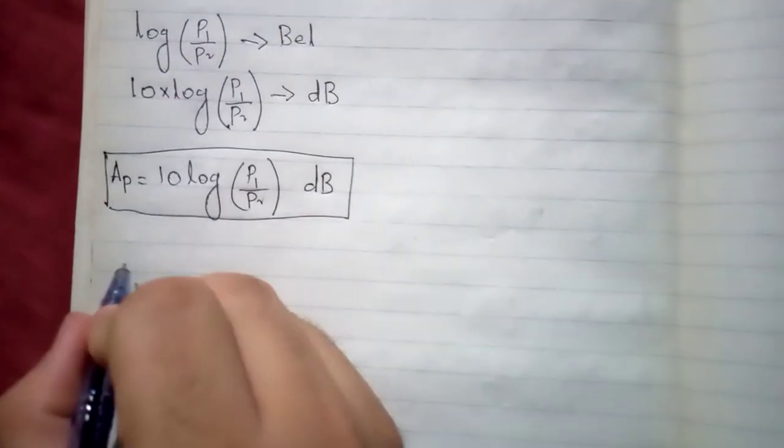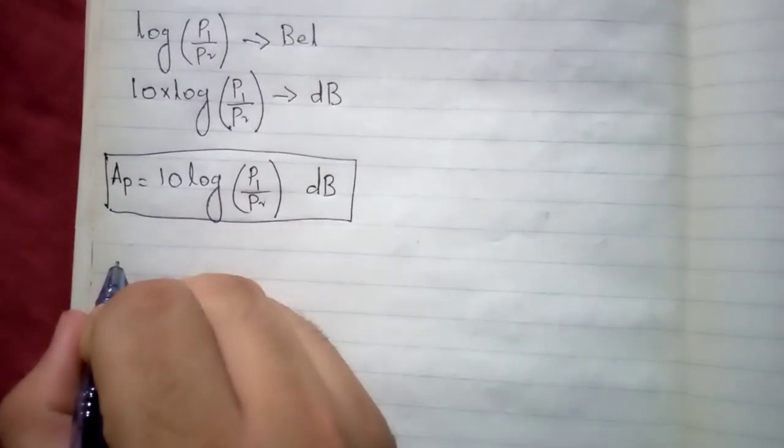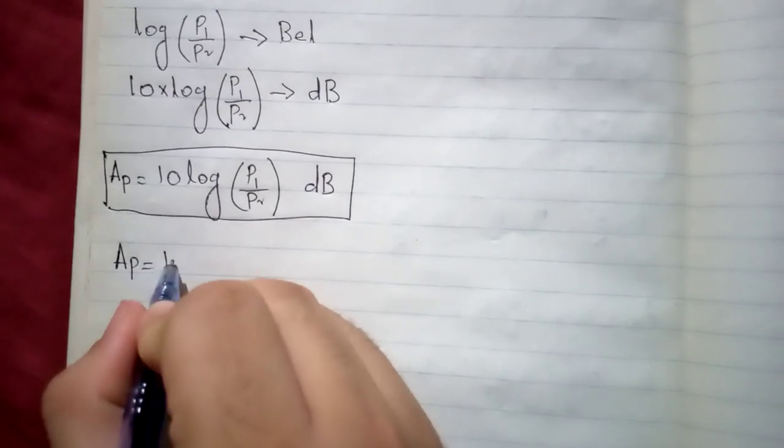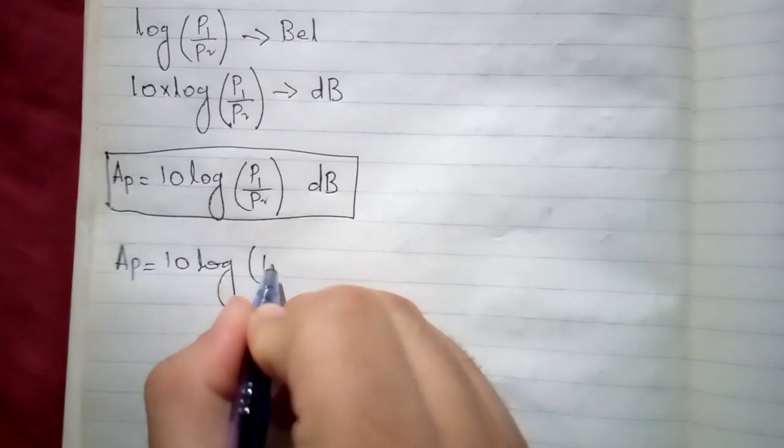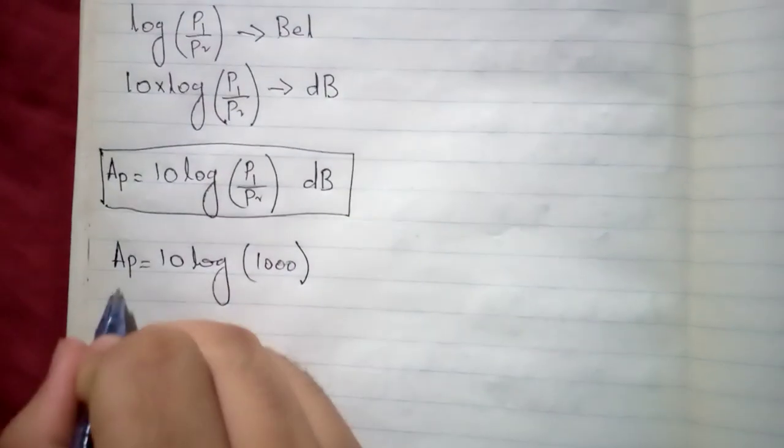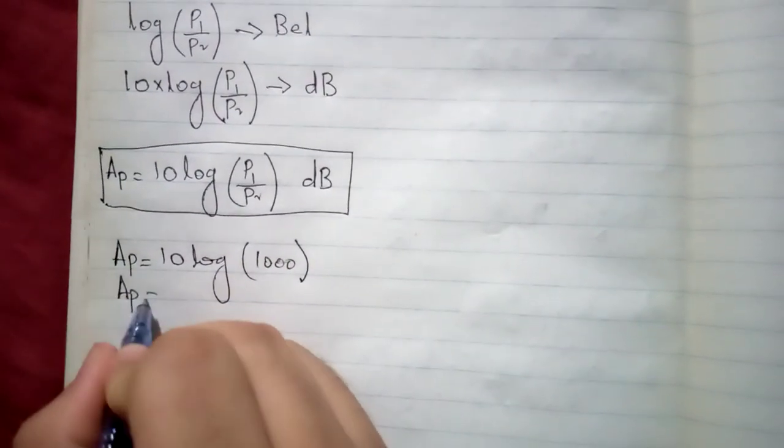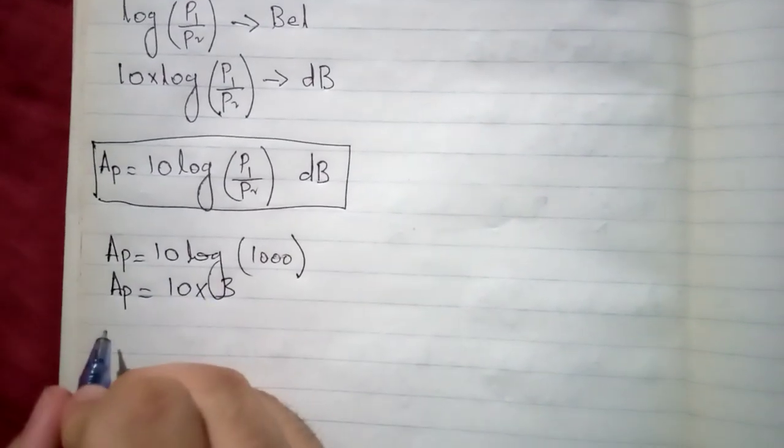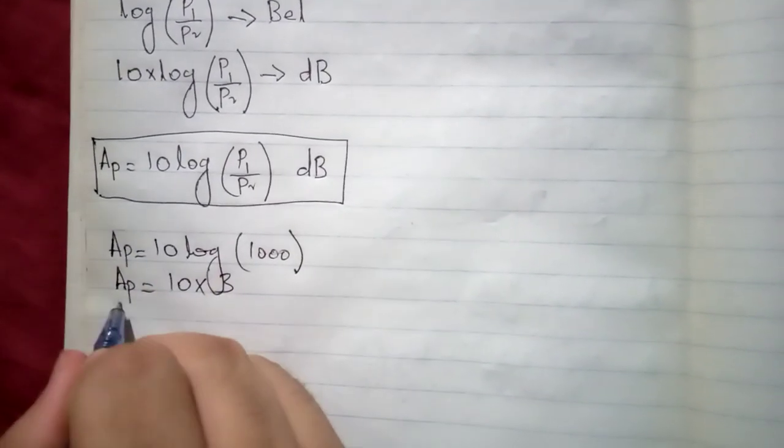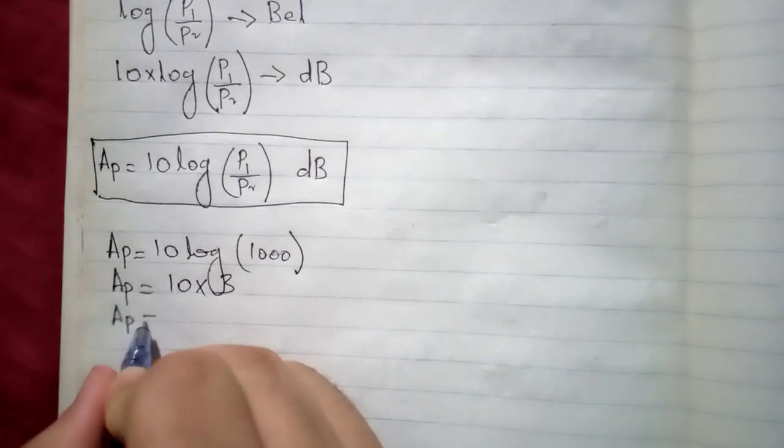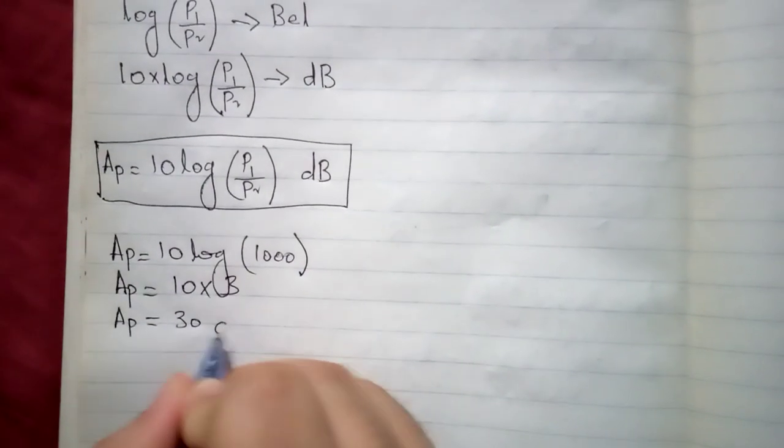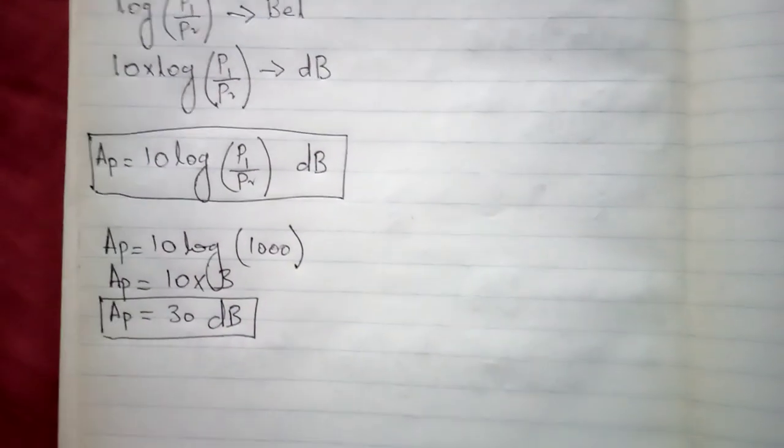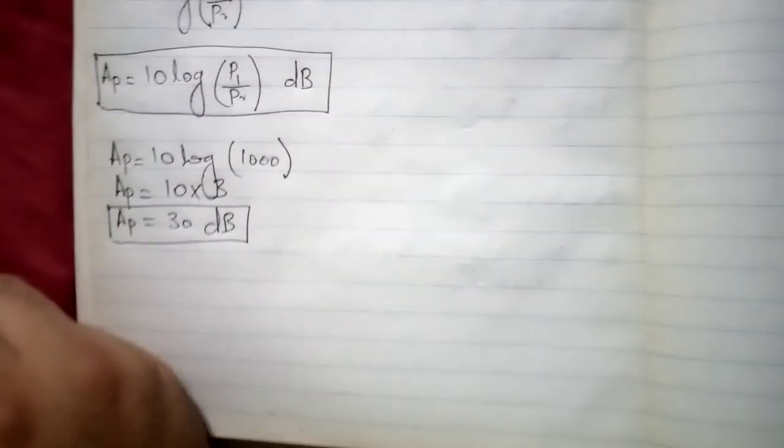P1 upon P2 has a value 1000, so you will take log of 1000, log of 1000 is 3. Then you will multiply 3 with 10, so the answer is 30 dB. Answer is 30 dB.